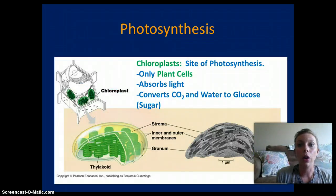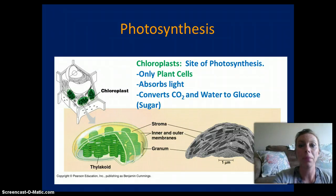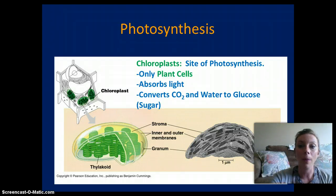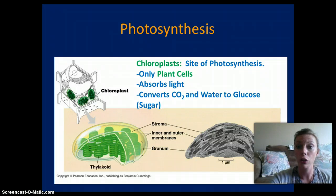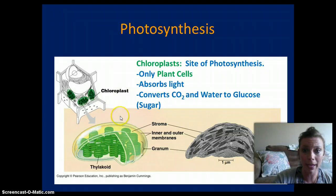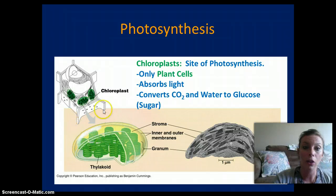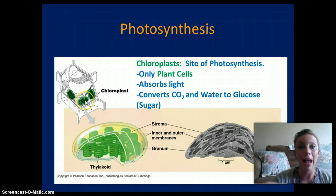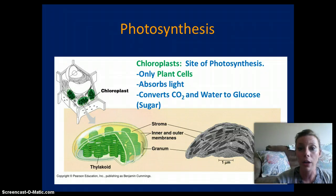Photosynthesis occurs in the chloroplast — it is the site of photosynthesis. The chloroplasts absorb light energy and convert carbon dioxide and water into glucose and oxygen. Chloroplasts are green because of the chlorophyll pigment, which absorbs the light and drives the conversion of carbon dioxide and water into sugar.